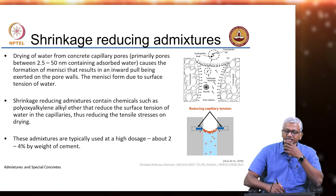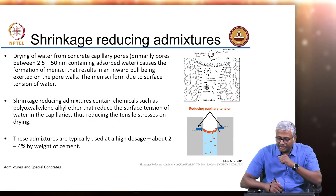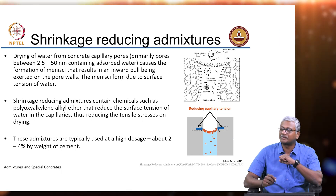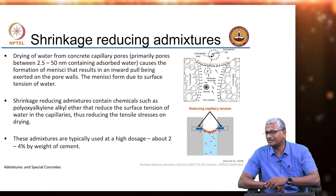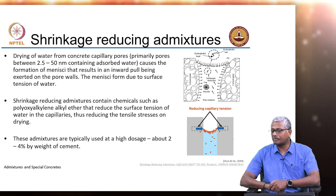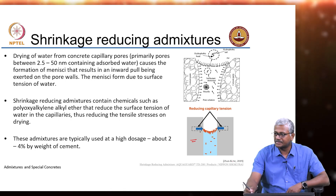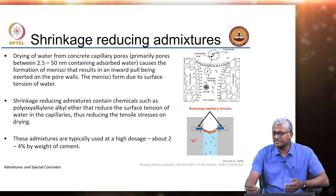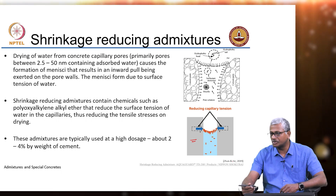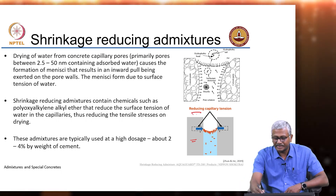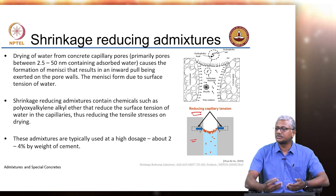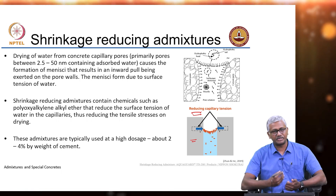We were also talking about the mechanism of action of shrinkage-reducing admixtures. Our TAs were able to arrange an interesting drawing which conveys the same thing — that the meniscus formed because of the drying of the water leads to increased capillary stresses in your cement paste surrounding the pore. The presence of the surface-active chemical — your shrinkage-reducing agent — cuts down the surface tension of the water, which essentially reduces the capillary tension felt in the paste surrounding the pore. Because you are reducing the capillary tension, you are reducing the chances of shrinkage cracking happening in your system.